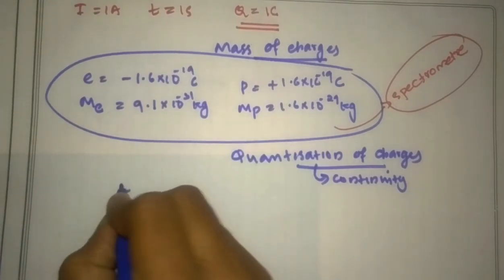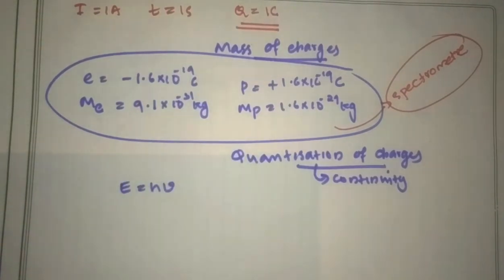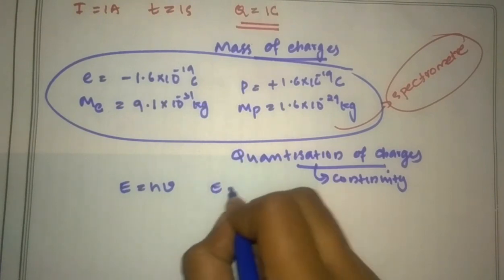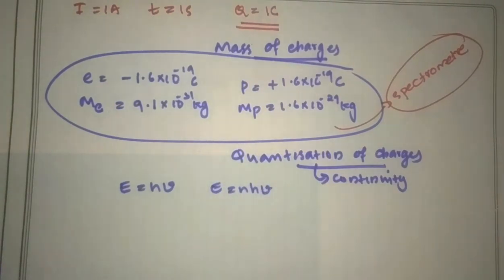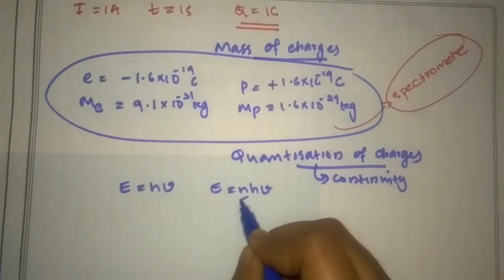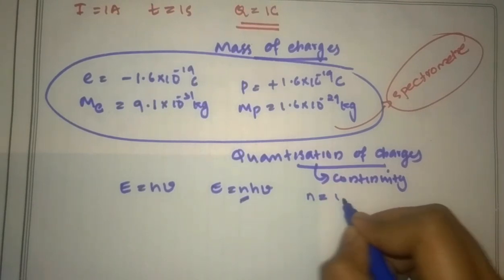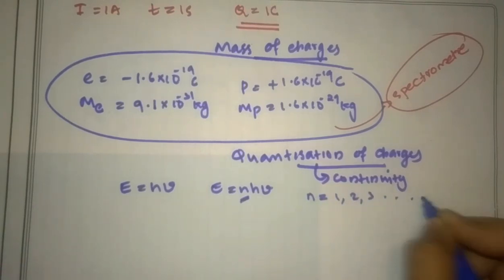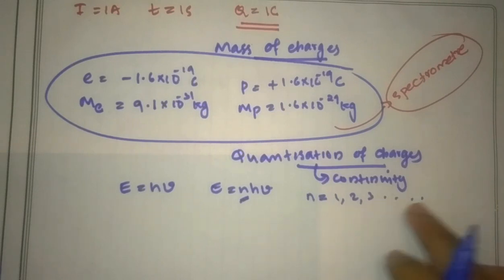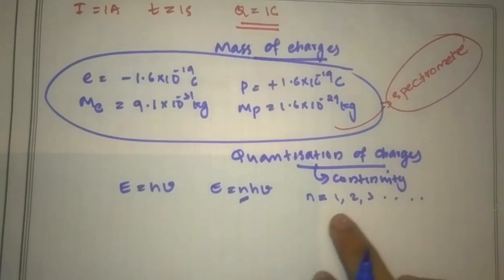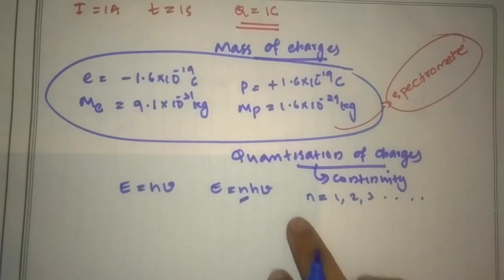For example, E = hν is quantized, but E = nhν is quantized, meaning the energy is equal to n times hν. Here n is the number of photons — that is 1, 2, 3, etc. Now there is continuity; now the equation is quantized.